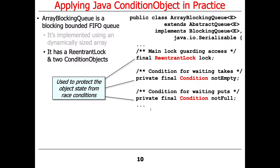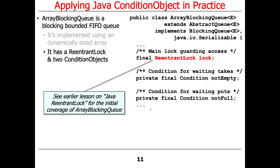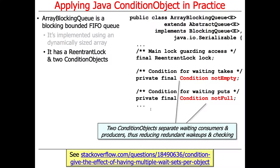In addition, we have some synchronizers: a ReentrantLock and two condition objects. These are used to protect the object state from race conditions and to coordinate everything. We have two condition objects to separate waiting consumers — threads trying to take from the queue — and producers — threads trying to put things in. This reduces redundant wake-ups and checking, and simplifies the code substantially relative to using a built-in monitor object, which only has one condition.